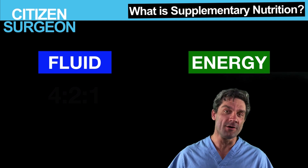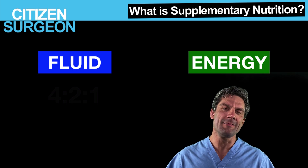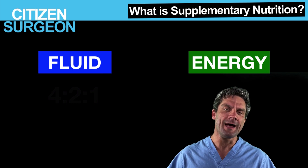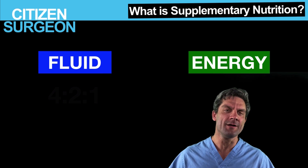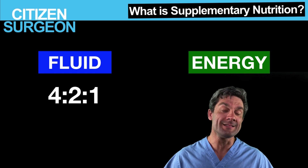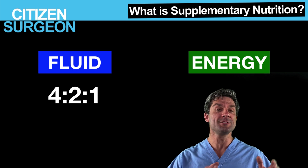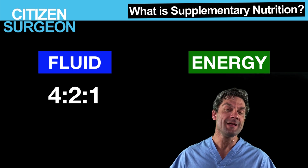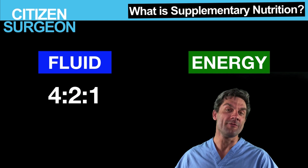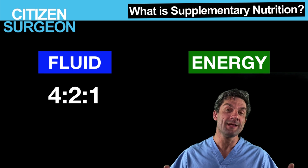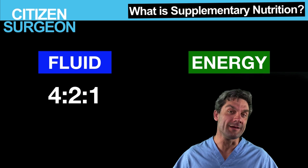Let's look at fluid first. How do you determine the fluid requirements for a patient? There are a lot of different rules. Because I'm a pediatric provider with many patients less than 20 kilos, I use the 4-2-1 rule. That means four mils per kilo for the first 10 kilos, add two mils per kilo for the next 10 kilos, and then one mil per kilo over 20 kilos. We'll do a sample calculation for a 70 kilo male.